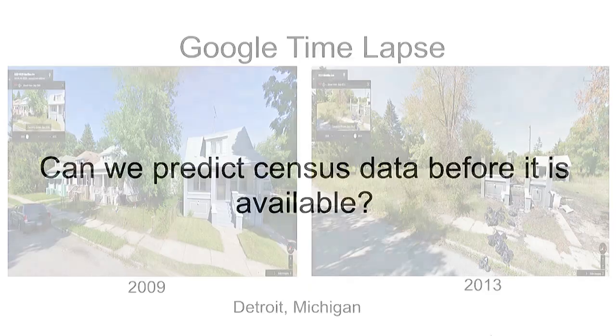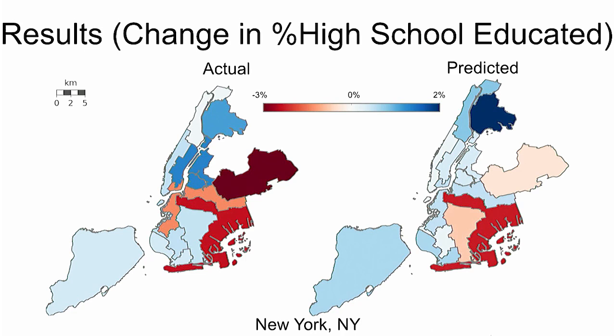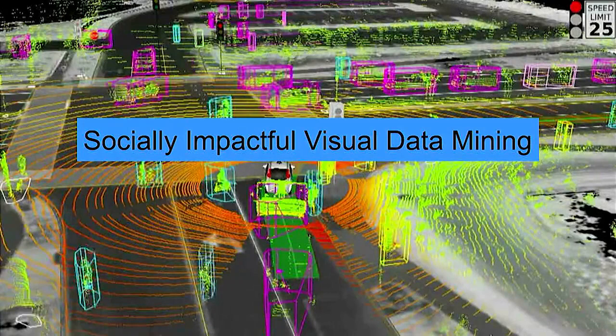The question is: can we predict this change before the data is available? This is preliminary unpublished results. You can see an example of the change in the percentage of high-school educated people in New York — red means it's decreased, blue means it's increased. I hope I've convinced you that we can do socially impactful visual data mining. The more self-driving cars and sensors we have, the more visual data we'll have. What we hope to do is give researchers and policy makers the tools to extract meaningful insights from this visual data so they can make informed decisions.